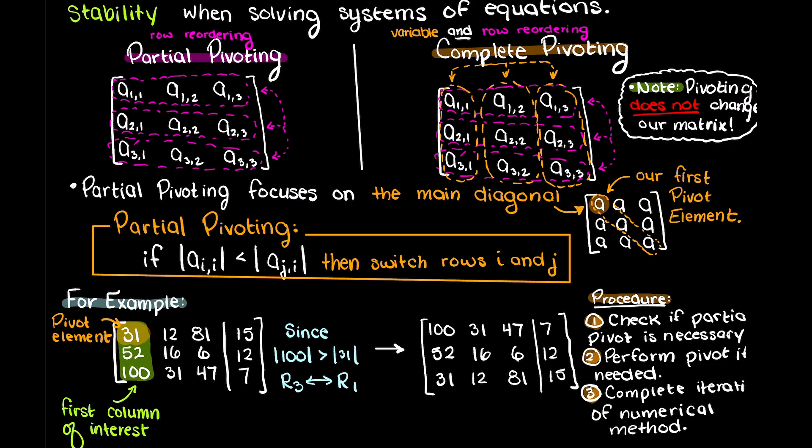So in summary, partial pivoting is an extremely valuable numerical method tool that will allow us to reduce truncation errors and prevent zeros on our main diagonals when solving a system of linear equations.